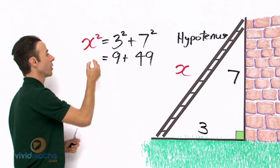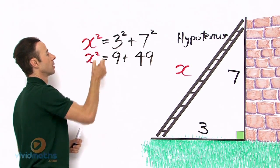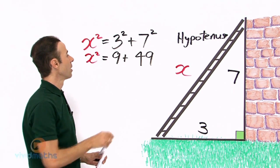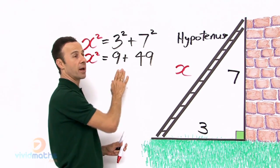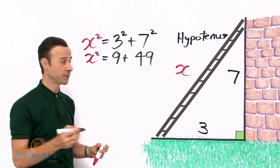Bring down the x squared into the new equation. Okay, let us have a look here: 49 plus 9 together gives us 58.